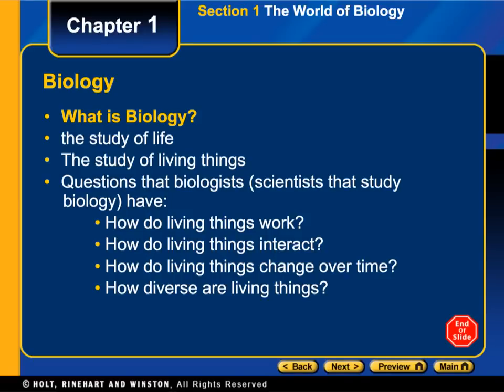So the first thing you need to know is what biology is — that's what the whole class is about. Biology is the study of life or living things. Biologists are scientists that study biology and they have all kinds of questions: how do living things work, how do they interact, how do they change, and how many different living things are there.